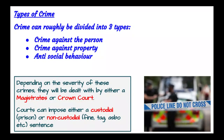The crown court has powers to sentence people to prison for life or issue an unlimited fine. You should also know that courts can impose either a custodial sentence (prison) or a non-custodial sentence, such as a fine, a tag, or an ASBO, depending on the severity of the crime and what is appropriate.